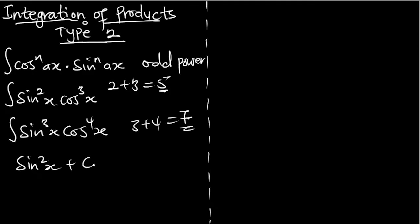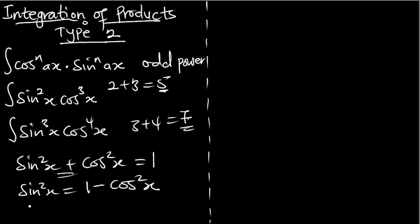First, we must know this identity: sin²x + cos²x = 1. We are going to use this identity for the odd powers case. When we want to make sin²x the subject we get sin²x = 1 − cos²x, and with this we are going to solve examples under type 2.